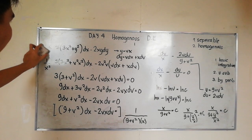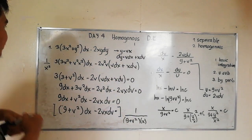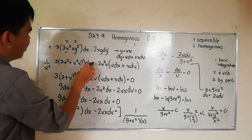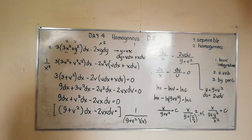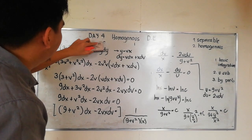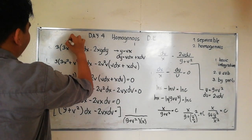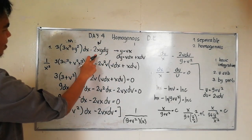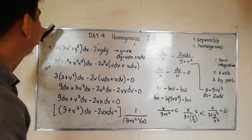The first step is to find out if this problem is homogeneous. This term is second degree, this term is second degree, and this term is second degree. So it is homogeneous. This is M and N — M is a function of x and y, and N is a function of x and y. So this can be solved by the homogeneous method.